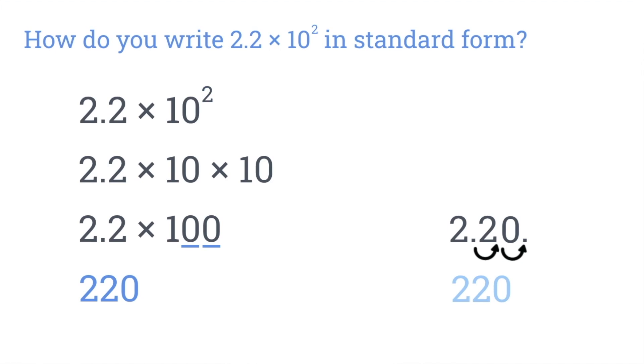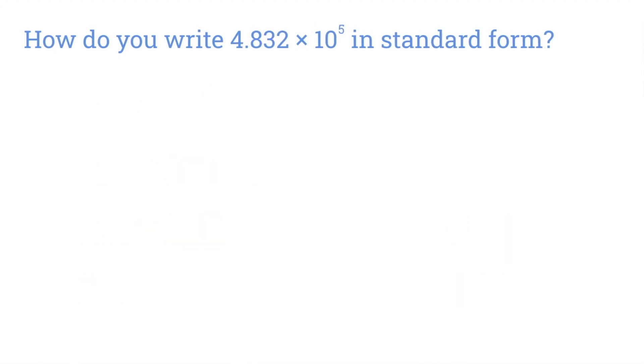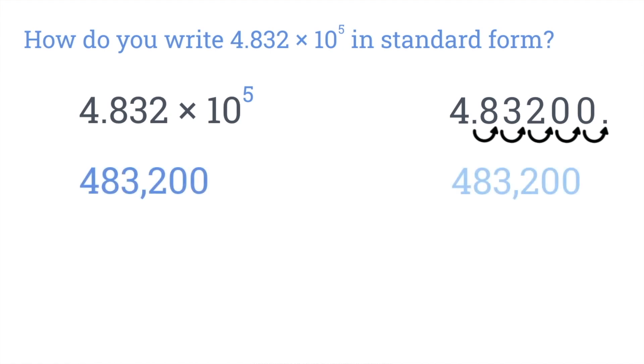Let's try another one. How do you write 4.832 times 10 to the power of 5 in standard form? Well, the power of 10 here is 5. So let's take 4.832 and move the decimal point five places to the right. We'll need to write a couple extra zeros here. Now, let's move that decimal. So, written in standard form, 4.832 times 10 to the power of 5 is 483,200.